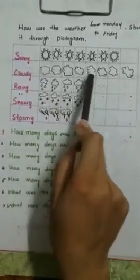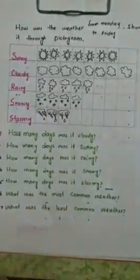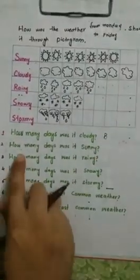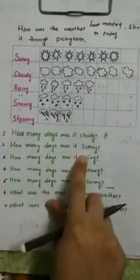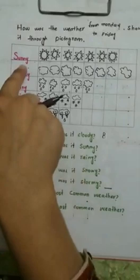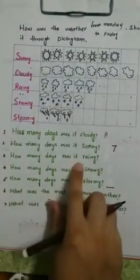Counting the cloudy days: 1, 2, 3, 4, 5, 6, 7, 8 — 8 days were cloudy. How many days was it sunny? Yes, the first one. Counting: 1, 2, 3, 4, 5, 6, 7 — 7 days.